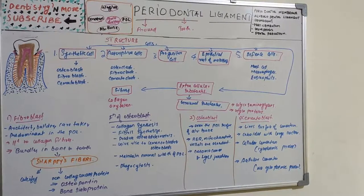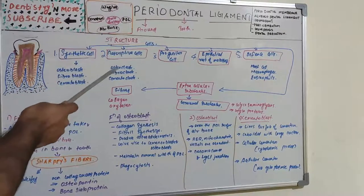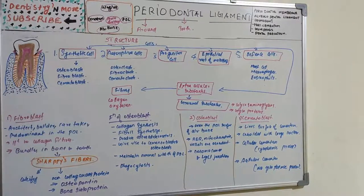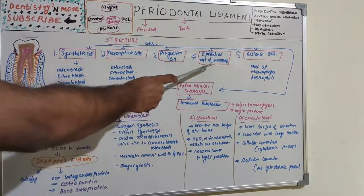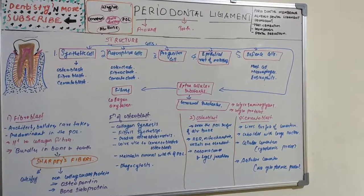Synthetic cells include osteoblasts, fibroblasts, and cementoblasts. Resorptive (destructive) cells include osteoclasts, fibroclasts, and cementoclasts. 'Blast' means create; 'clast' means destruct. Progenitor cells and epithelial rests of Malassez are also present. In extracellular substances we have fibers (collagen and oxytalan fibers) and ground substances (glycosaminoglycans and glycoproteins).